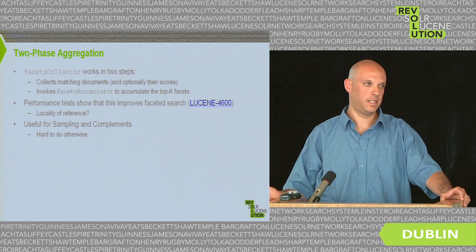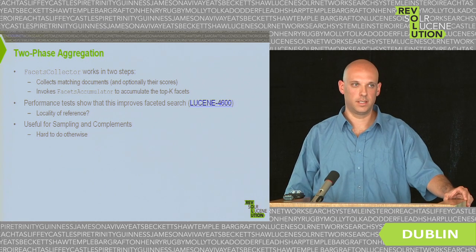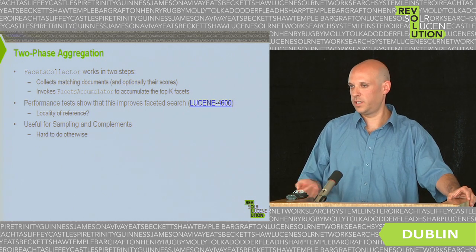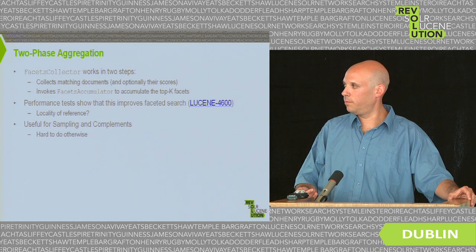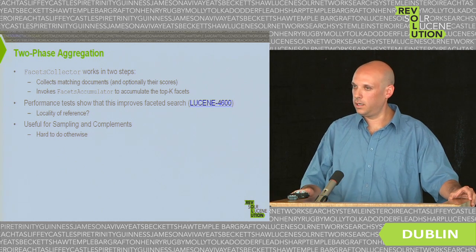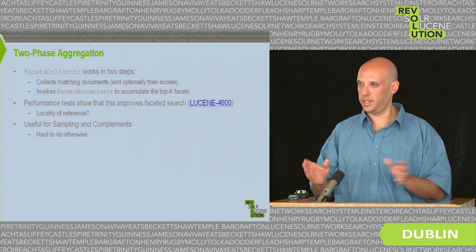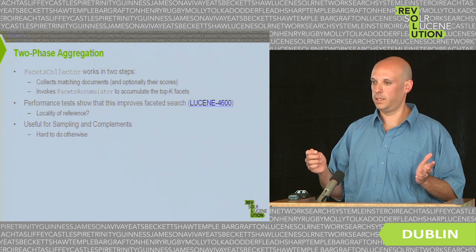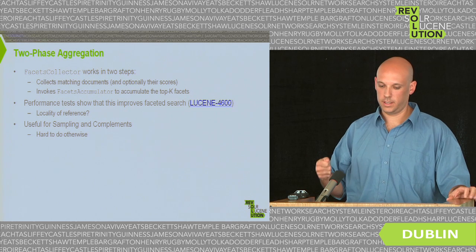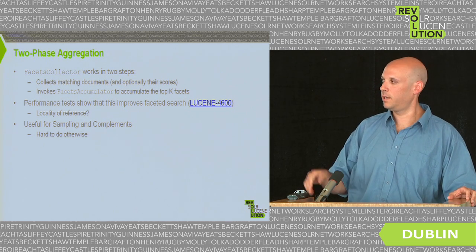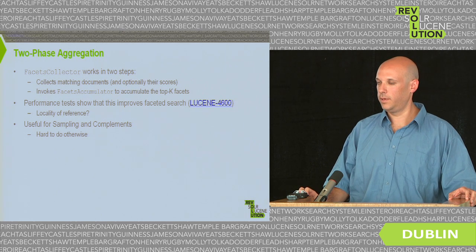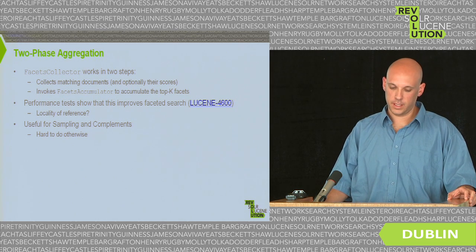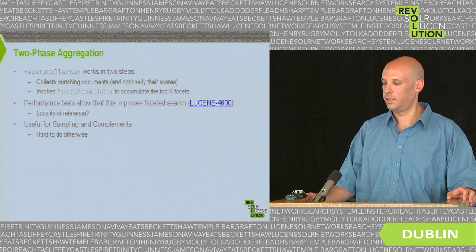Two-phase aggregation is also very useful for sampling. If you have hundreds of millions of results and want to facet on a sample, doing it on the fly makes it hard to guarantee you'll sample the exact percentage you want. In a second phase you can make more intelligent decisions about which documents to sample and which to skip, so it plays better that way.